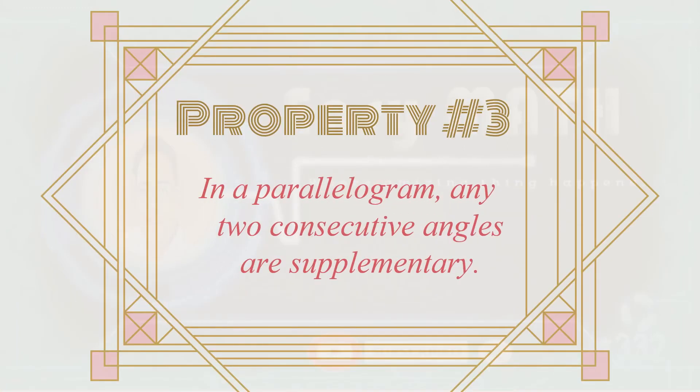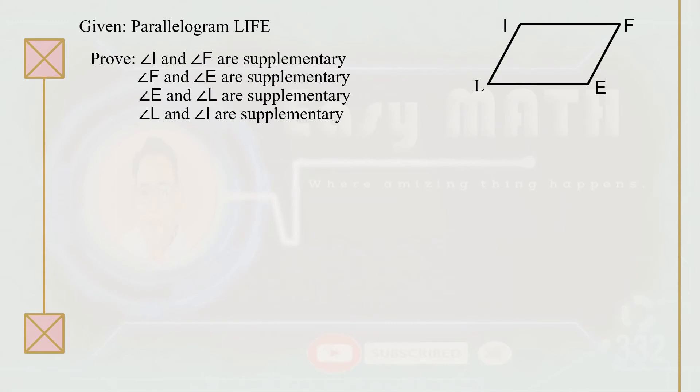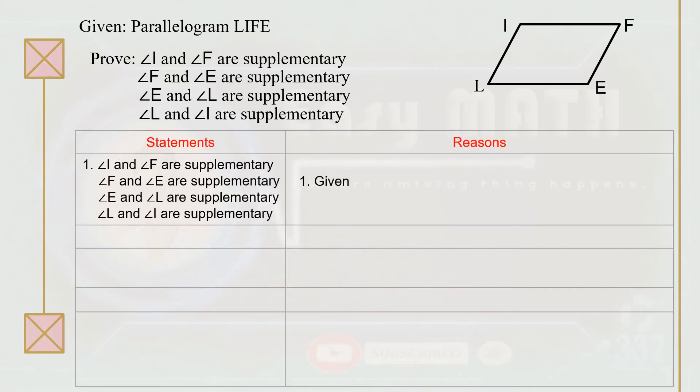Property number three: in a parallelogram, any two consecutive angles are supplementary. Moving on to property number three, we're going to prove that in a parallelogram, any two consecutive angles are supplementary. The first statement is always the given. Statement number two: segment LI is parallel to segment FE. The reason is that any two opposite sides of a parallelogram are parallel.